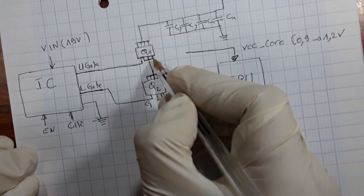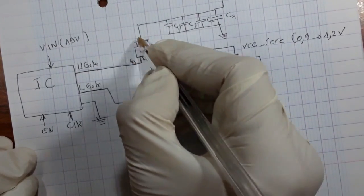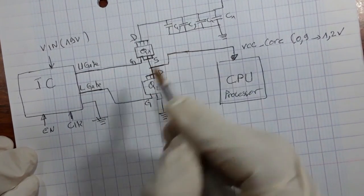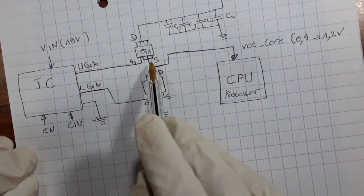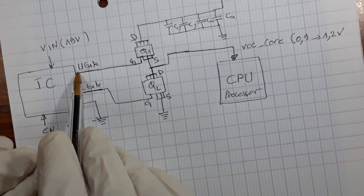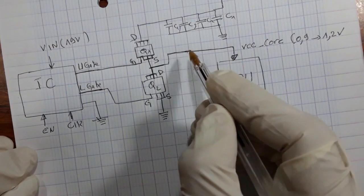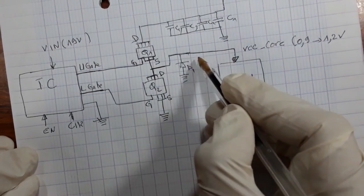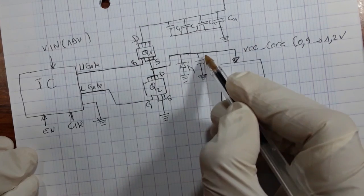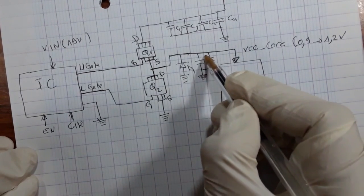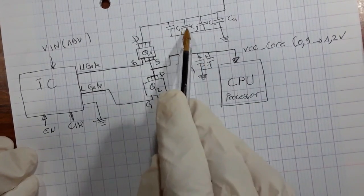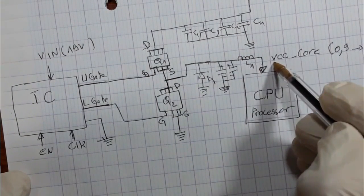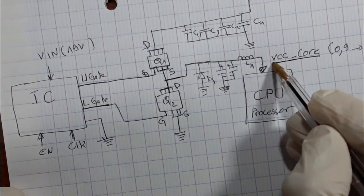Here we have gate, source, and drain connections on both MOSFETs. The VCC core is generated after the upper gate and lower gate signals are applied. Normally we should also have a diode D1 for protection, capacitors — both chemical and PF — and a coil L1 to generate the VCC core output.